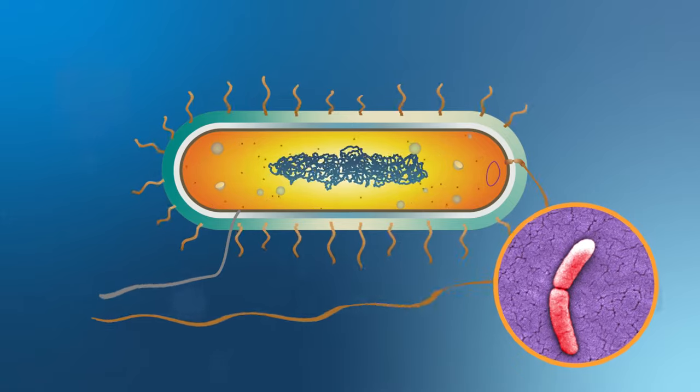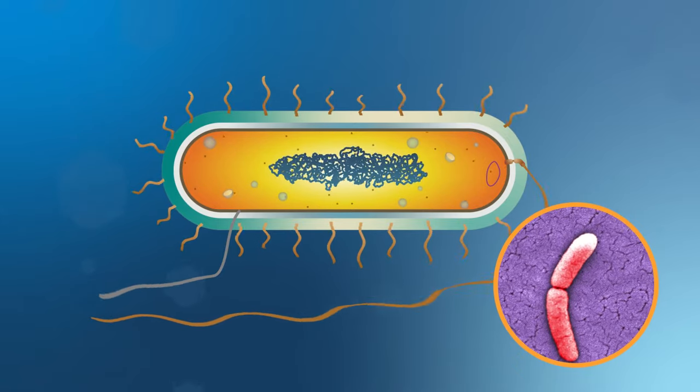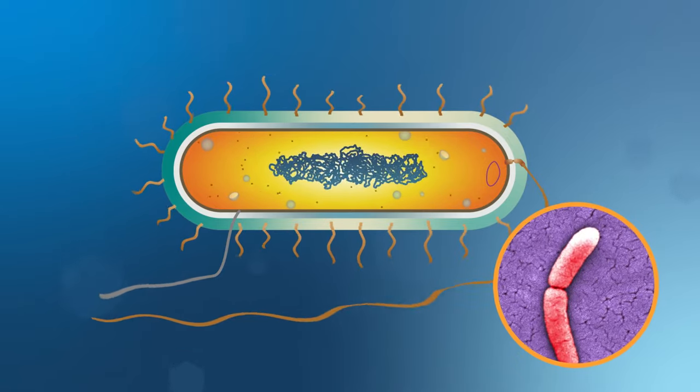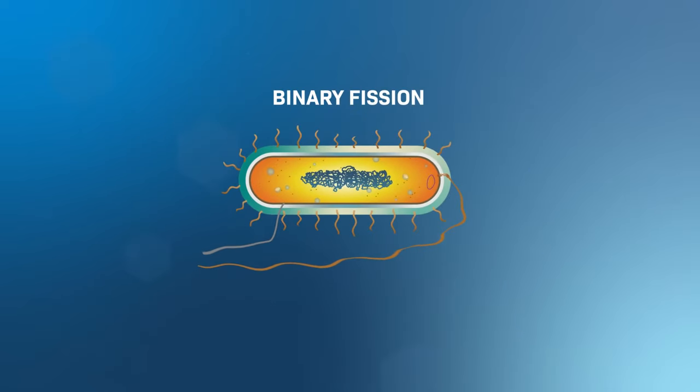Prokaryotic cell reproduces by dividing, creating two identical cells. This process is called cell division, or binary fission.